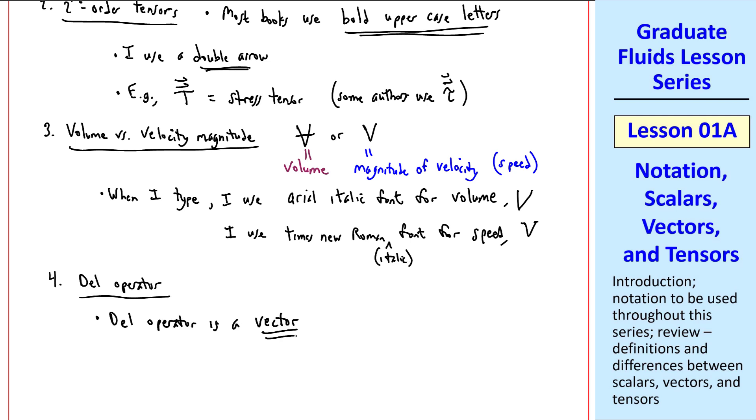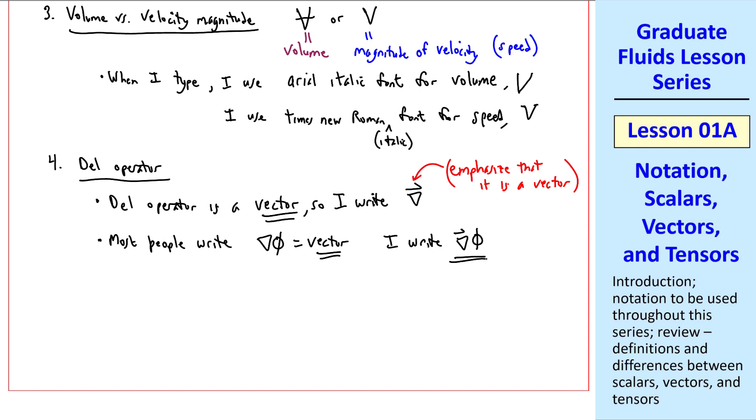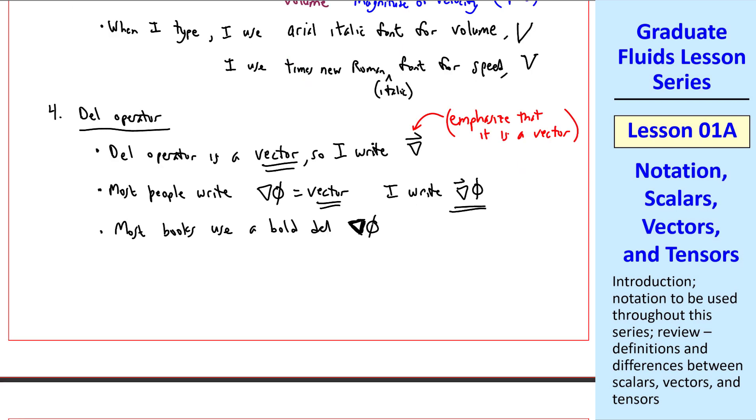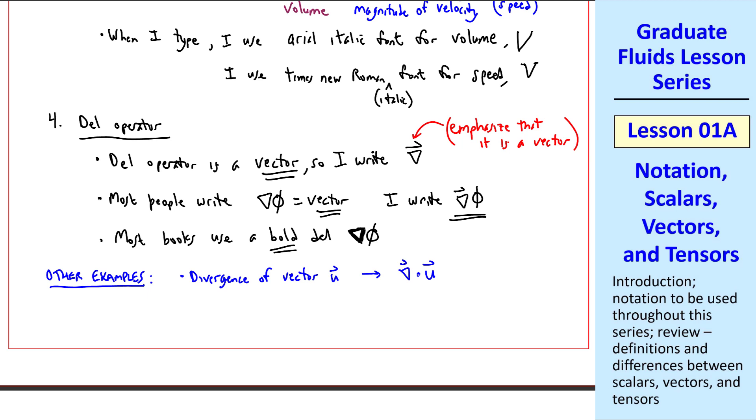Now let's talk about the del operator. The del operator is a vector, so I write del with an arrow over it to emphasize that it is a vector. For something like gradient of phi, most people write del phi, but the gradient of scalar phi is actually a vector. So I write del phi with the arrow. If you look closely, you'll see that most books use a bold del. I think that's why when people write del phi, they don't put the arrow. Other examples: I would write the divergence of vector u as del dot u. Both of them are vectors. This dot product of two vectors is actually a scalar. The curl of velocity vector u, I write as del cross u, whereas this is a scalar, this is a vector.